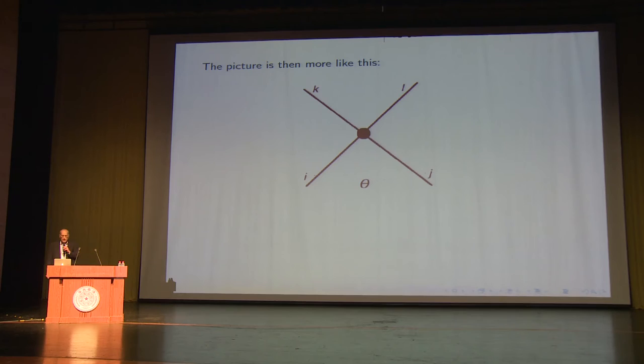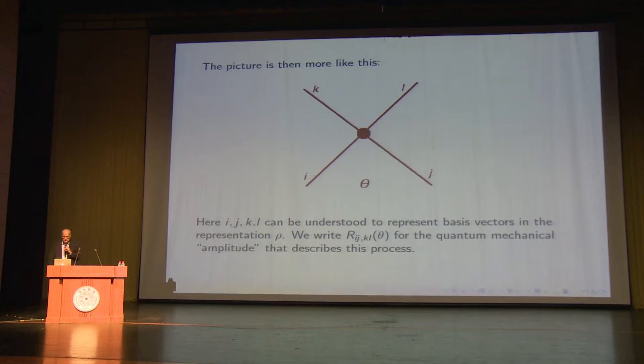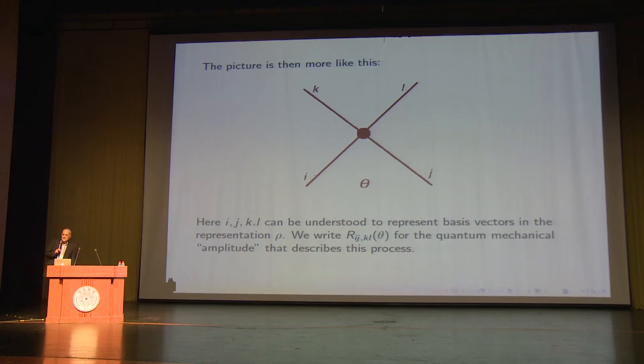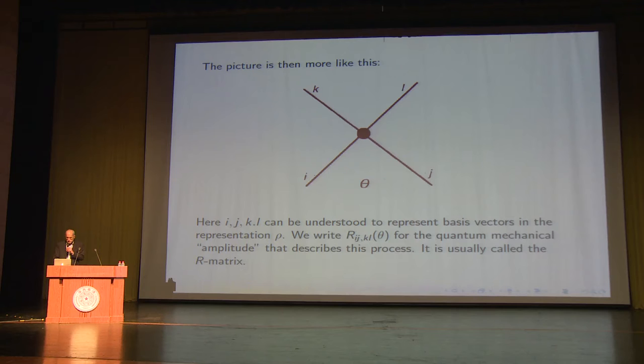The picture is then more like this: there's a rapidity difference θ, particles of type I and J come in, particles of type K and L go out. You can think of I, J, K, and L as basis vectors for our representation. We write R_{IJKL}(θ) for the quantum mechanical amplitude describing this process. R is almost the same as the S-matrix, but when discussing integrable systems, an overall phase of the S-matrix is unimportant. The R-matrix is just the S-matrix with an overall phase not specified. People working on integrable systems call it the R-matrix, not the S-matrix.